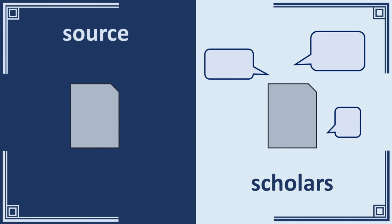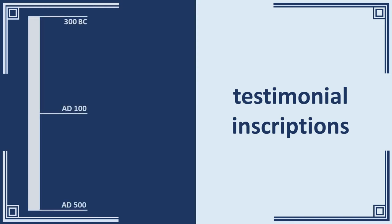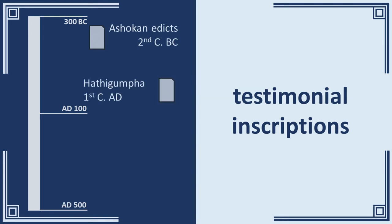Let me try and make this a bit more concrete with an actual example of a testimonial inscription. Inscriptions come in all shapes and sizes and serve a variety of purposes — as acts of piety, marks of ownership, or legal records by all sorts of people. But the group we are interested in, a very small minority, were put up on behalf of rulers and were intended to extol their power, virtues and achievements — thus my label 'testimonial.' Famous examples from South Asia include the Edicts of Ashoka, the Hathagumpha inscription, and Kanishka I's Rabatak, which I will focus on today.